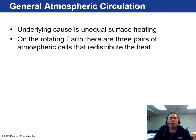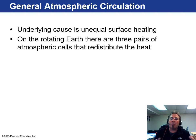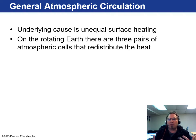In general, there are three pairs of atmospheric cells that redistribute heat around the planet. This occurs because of unequal surface heating — equatorial regions receive much more sun than polar regions. Those differences in heat translate into pressure gradients, which create wind patterns. Those wind patterns form surface lows and highs that redistribute air in various ways.